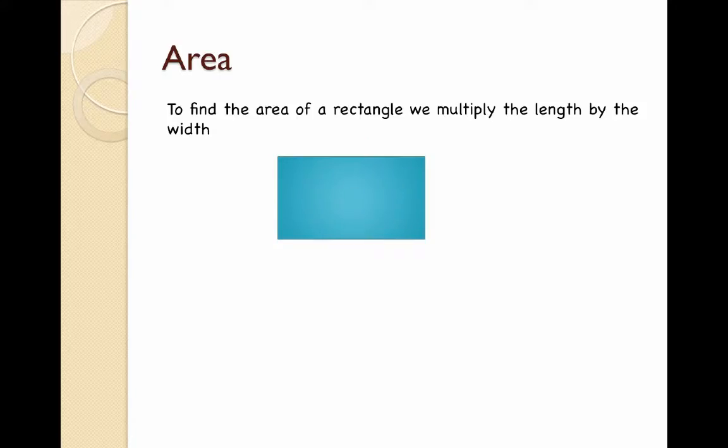Let's take a little trip down memory lane and take a look at area. To find the area of a rectangle we need to multiply the length by the width. In this example the length is 5 and the width is 3. So finding the area is as simple as doing 5 times 3 which gives us 15.